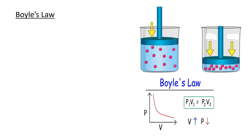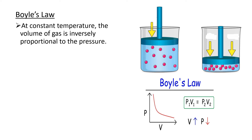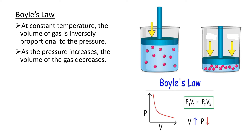The first Gas Law I will discuss is Boyle's Law. This law shows the relationship of pressure and volume given that the temperature is constant. At constant temperature, the volume of the gas is inversely proportional to the pressure of the gas, meaning as the pressure increases, the volume of the gas decreases.